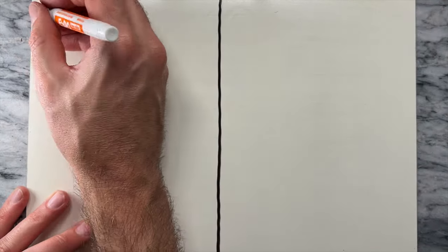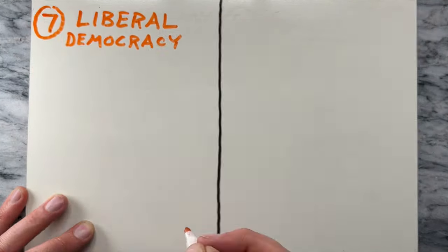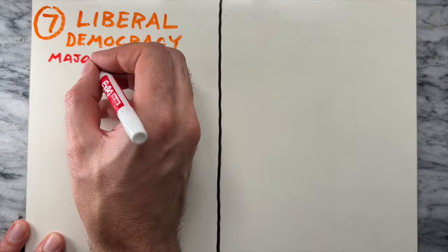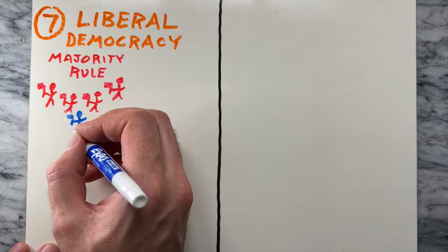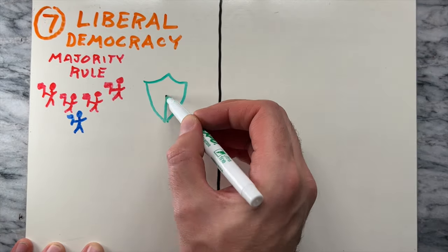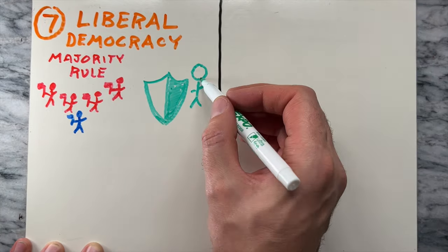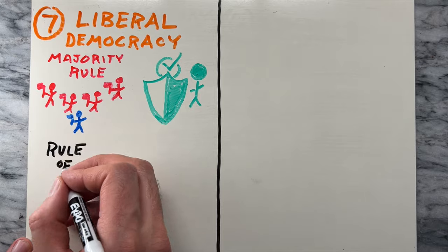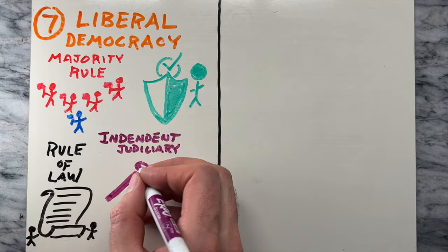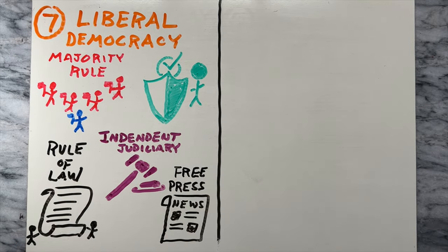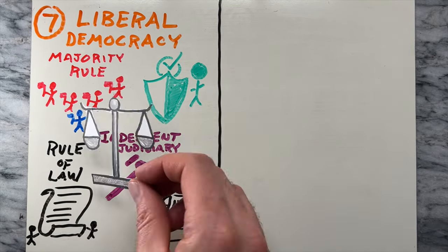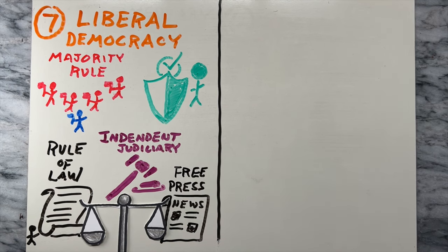Seventh is liberal democracy. Liberal democracies are characterized by not only majority rule and the protection of individual rights, but also the rule of law, an independent judiciary, and a free press. They aim to balance majority will with the protection of minority rights.